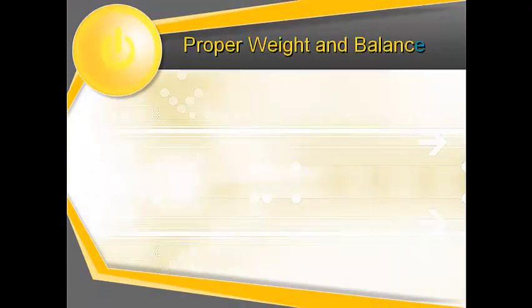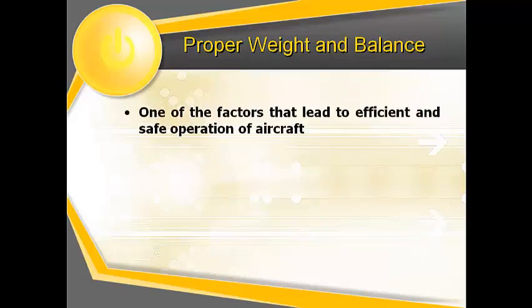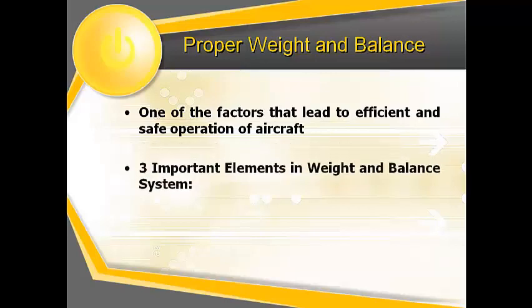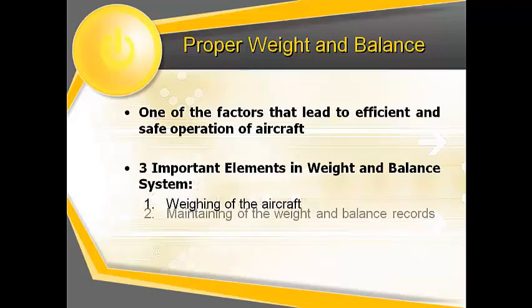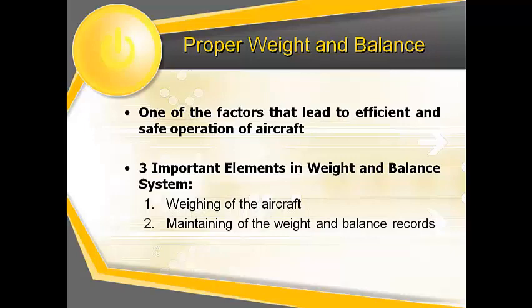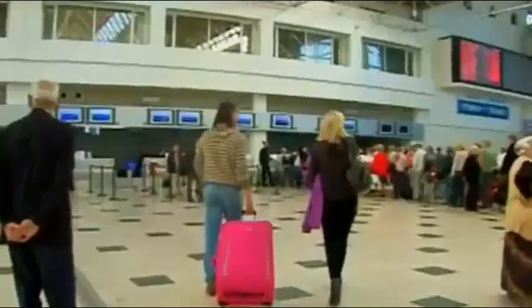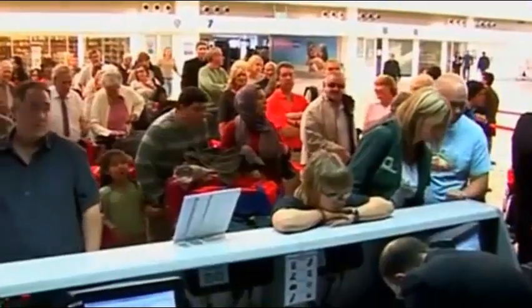There are many factors that lead to efficient and safe operation of aircraft. Among these vital factors is proper weight and balance control. The weight and balance system commonly employed among aircraft consists of three equally important elements: the weighing of the aircraft, the maintaining of the weight and balance records, and the proper loading of the aircraft. An inaccuracy in any one of these elements nullifies the purpose of the whole system.